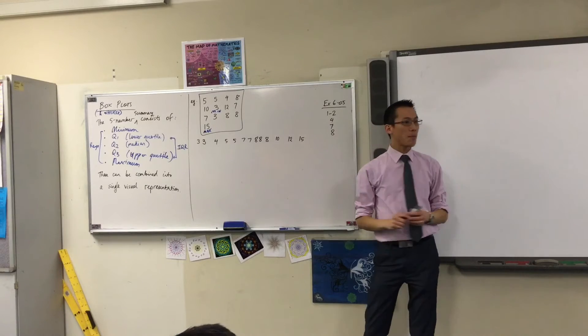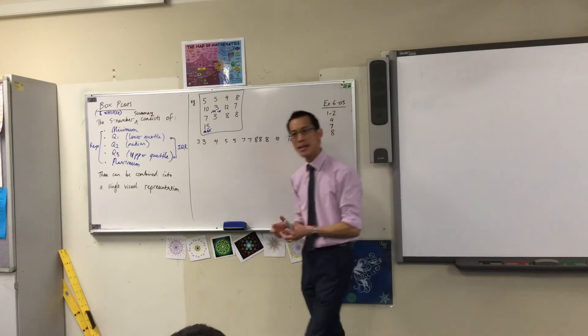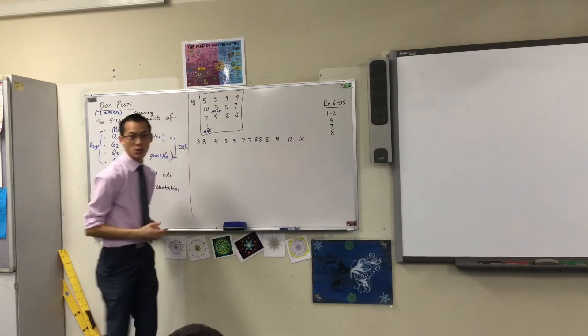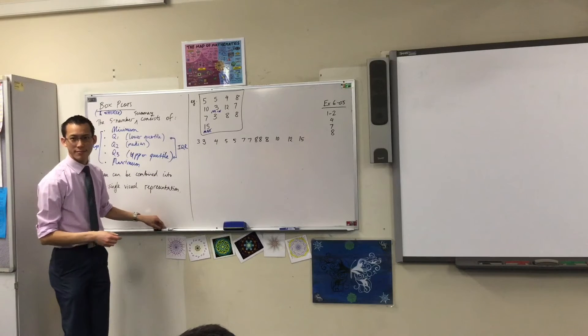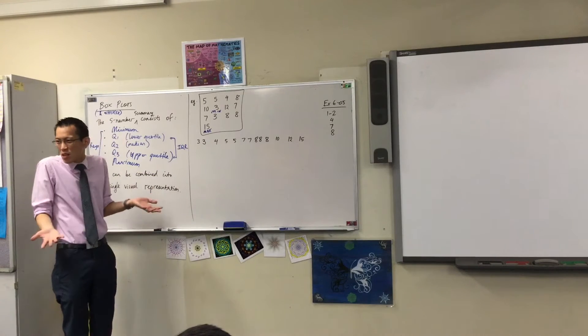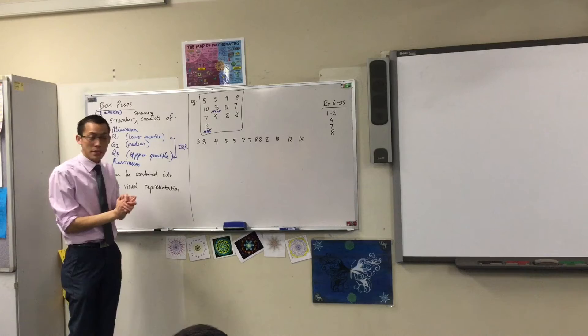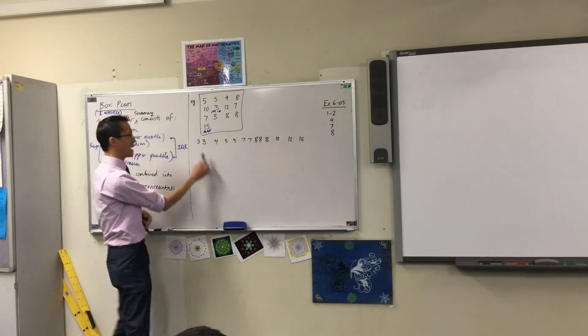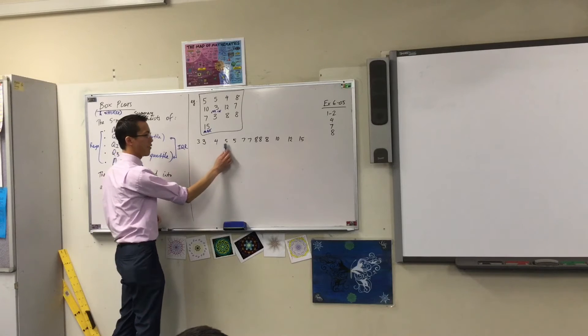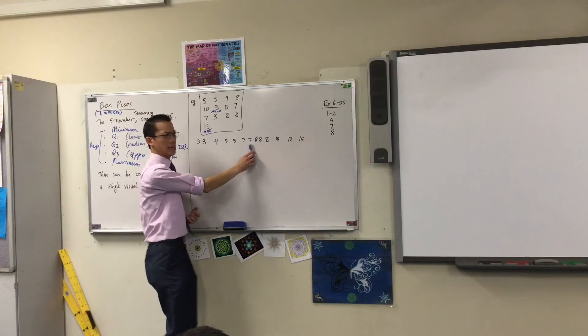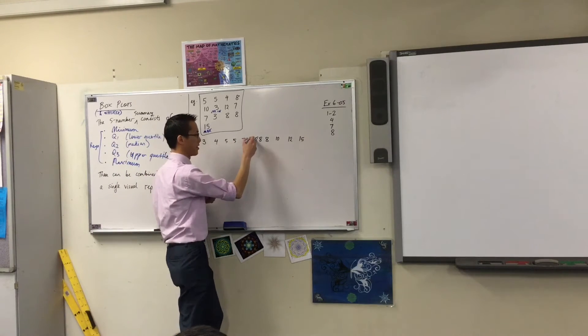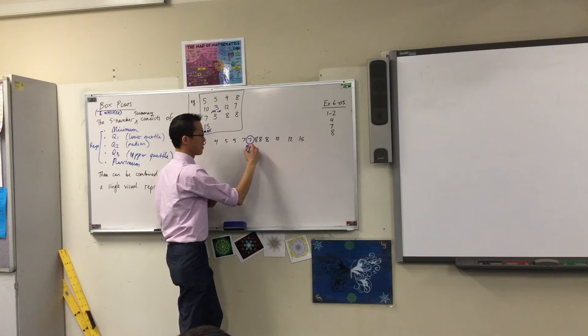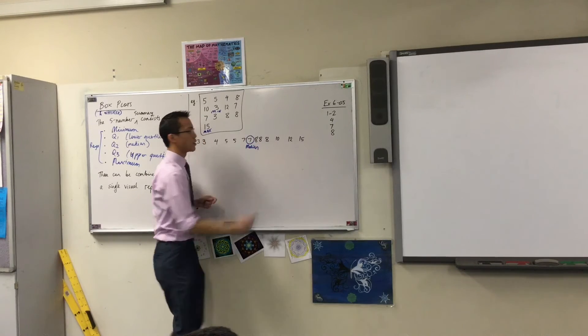So now I have my minimum and my max. There are an odd number of scores, so that means the median is going to be one of these scores. Which one? The middle one. Which is the middle one? The seventh. So it'll be the seventh score out of 13. So if you have a look, you count up. 1, 2, 3, 4, 5, 6, 7. Interestingly, the seventh score is 7. So there's my median.